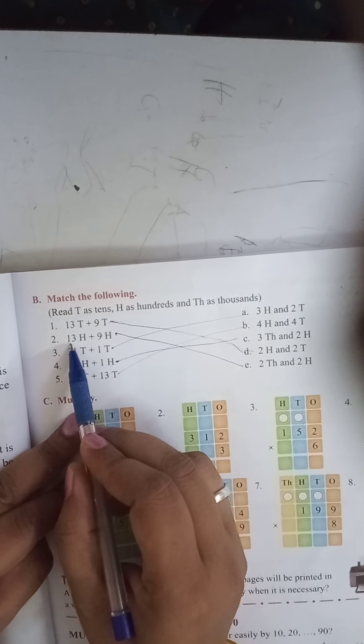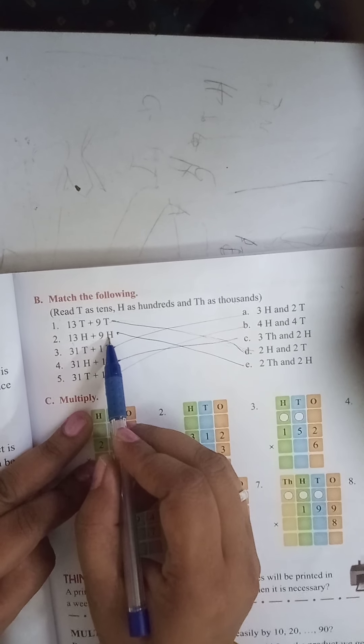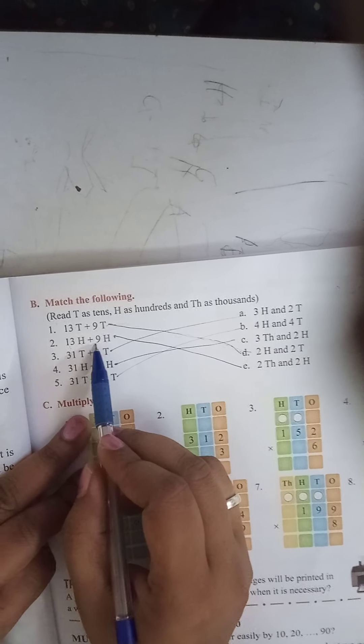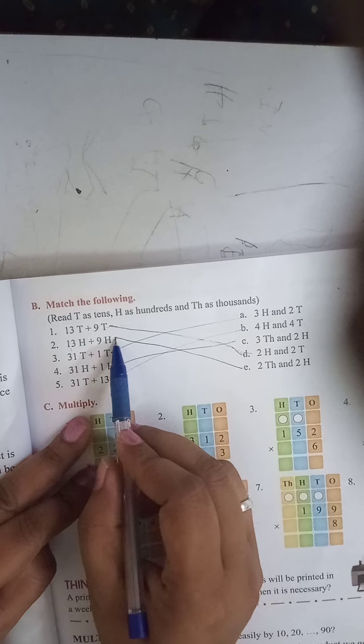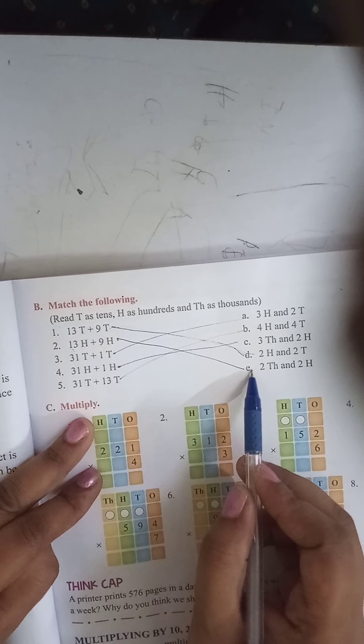Now second is 13 plus 9, thirteen hundred plus 9 hundred. Answer will be 22. So 2200.